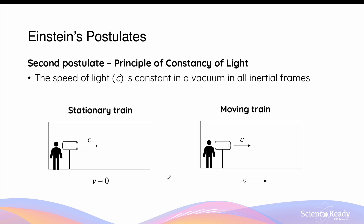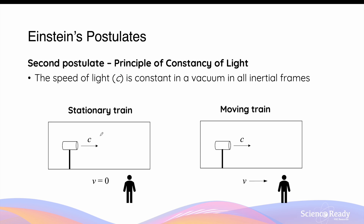The second postulate of special relativity is an extension of the first postulate. The second postulate is referred to as the principle of the constancy of light. It states that the speed of light, c, is constant in a vacuum for all inertial frames of reference. In a scenario where you have a stationary train and a moving train, for an observer inside the train who is also moving at the same velocity, the speed of light coming from any sources will be measured at c. And since the speed of light is constant for all inertial reference frames, if the person observing is outside the train, the speed of light will also be identical, regardless of how fast the train is moving.